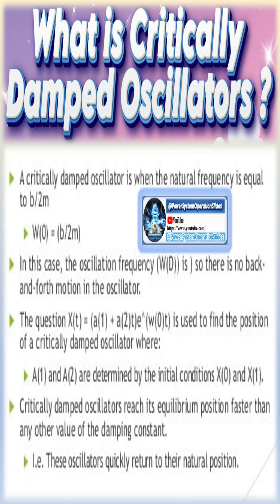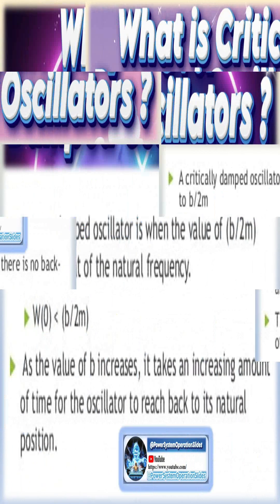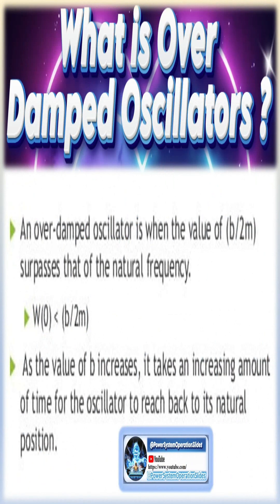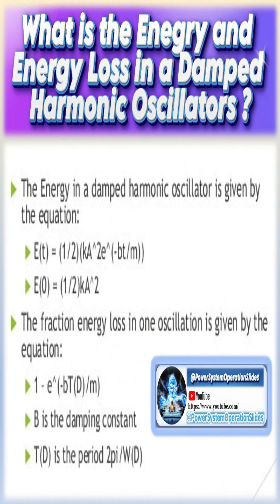Where there is loss of energy, the motion becomes damped. On the contrary, if the oscillator's circuit produces undamped oscillations, then there are no power losses or provision to compensate the power losses. Damping is the progressive diminution of amplitude of oscillations in an oscillatory system, caused by dissipation of stored energy.